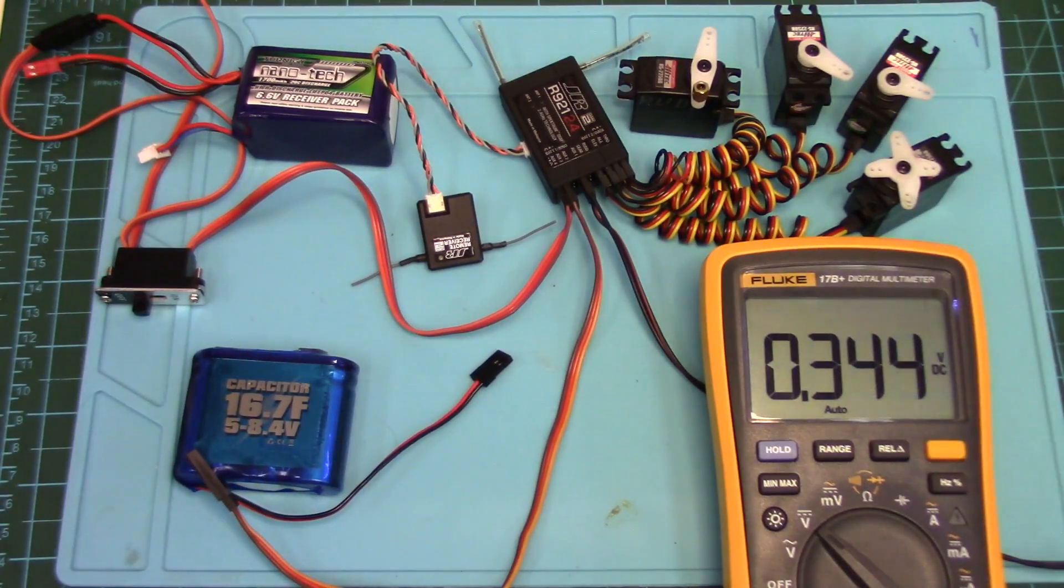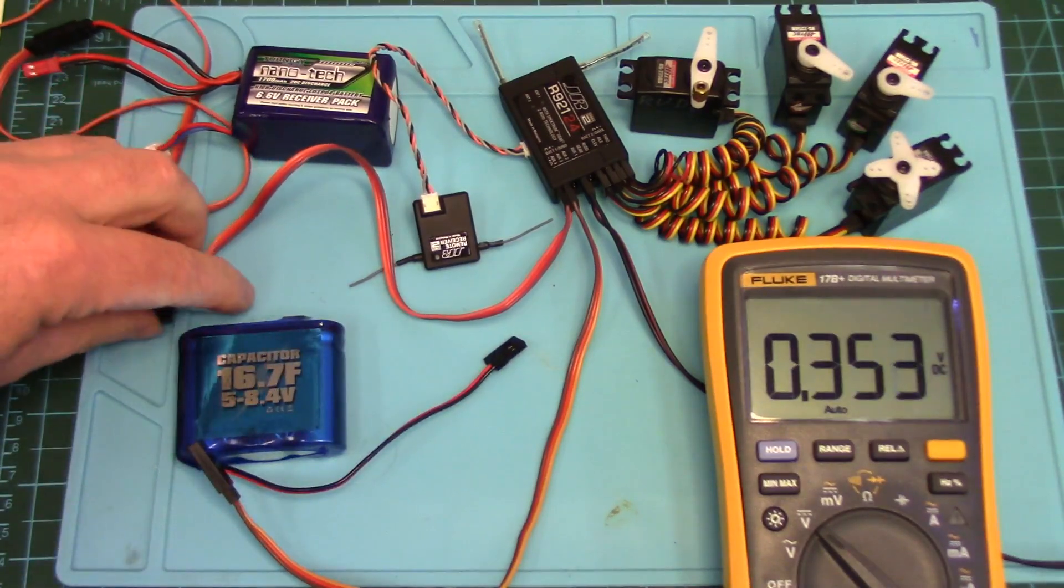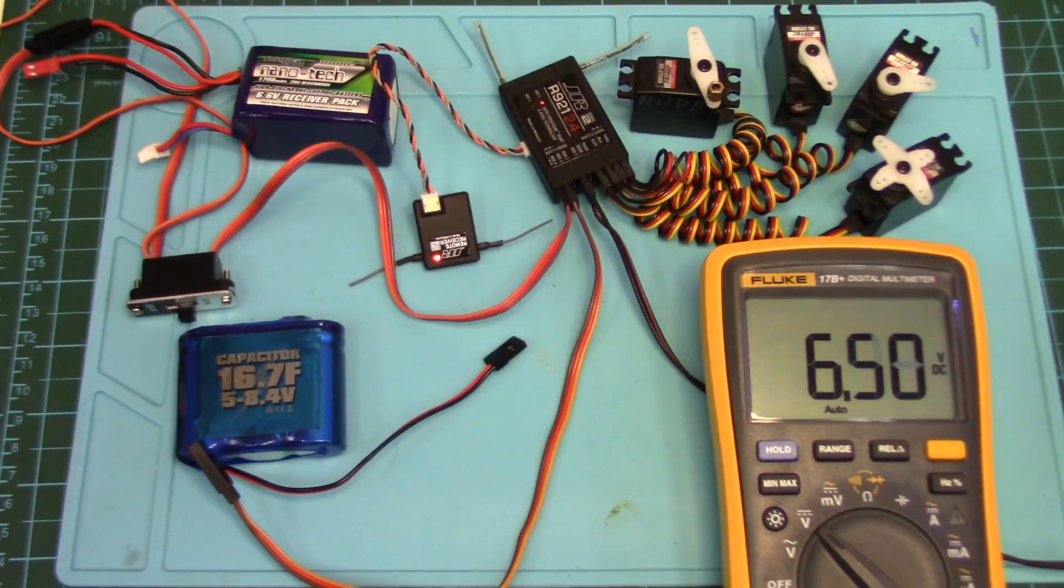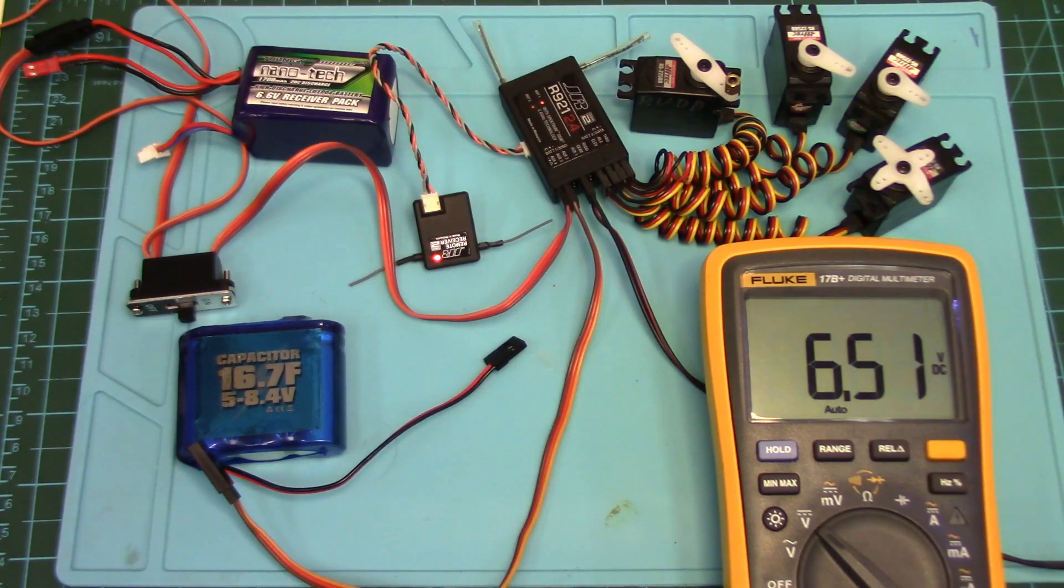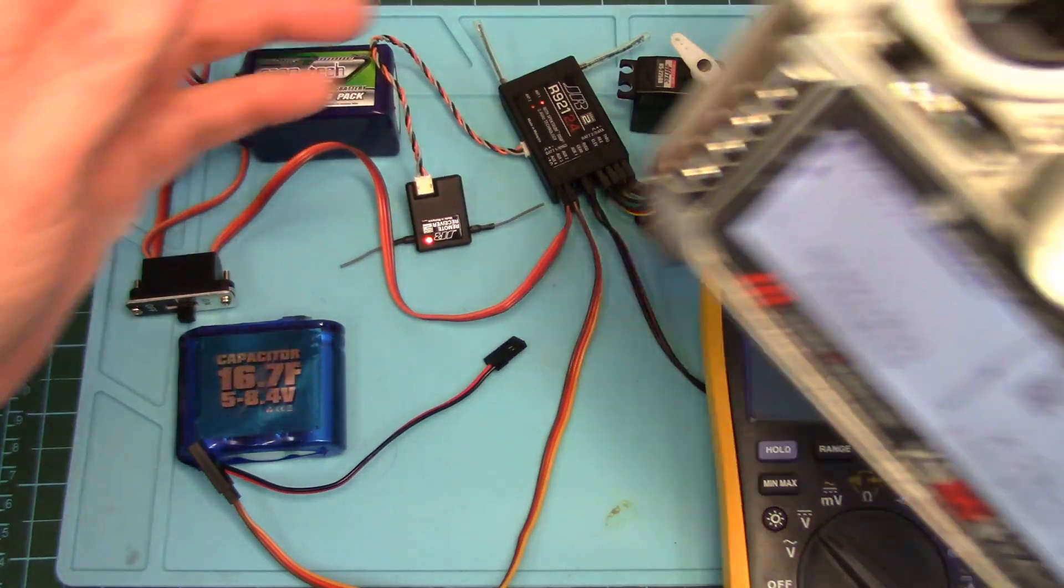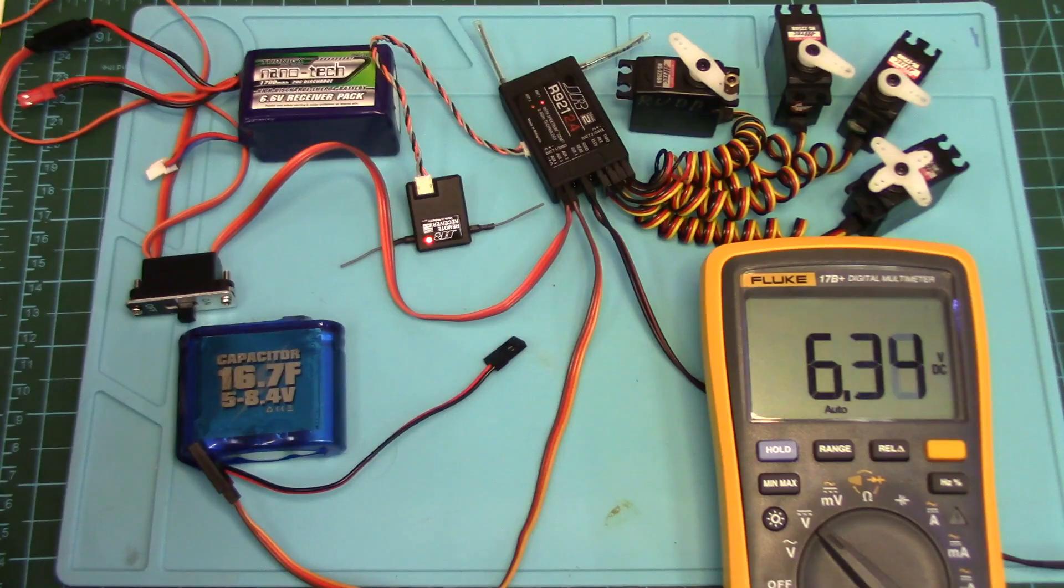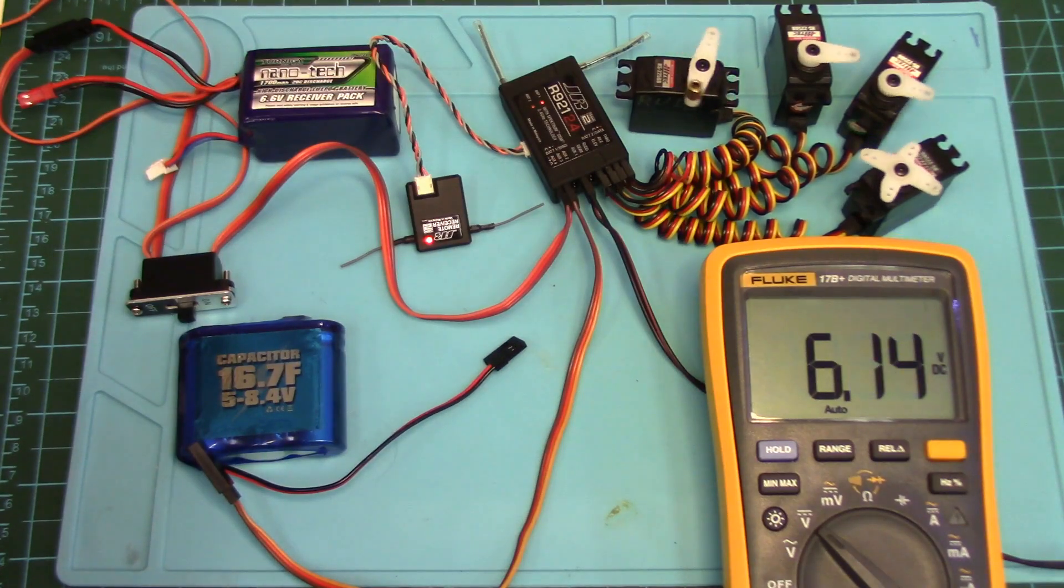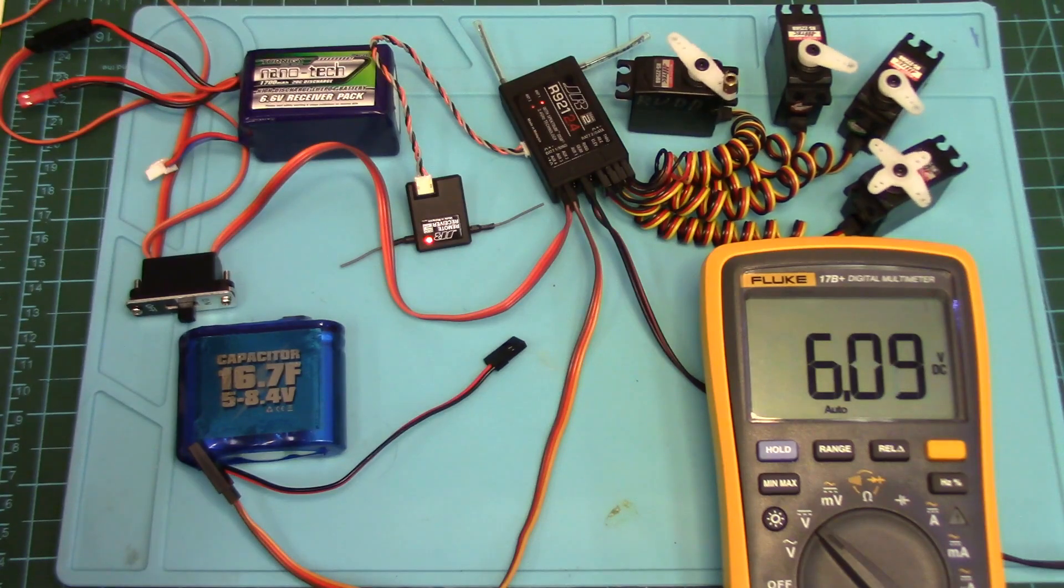So let's turn the radio on, and we will turn on the unit without this plugged in so you can see what the voltage is. It's roughly 6.5 volts, that's what the RX battery is supplying. And as we stir the radio sticks, we can see the servos moving and the voltage drops down as we're drawing current through it, but staying above 6 volts.